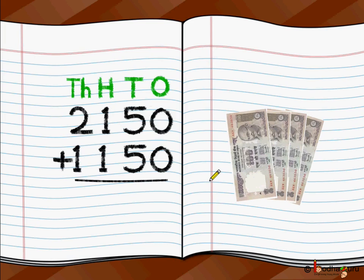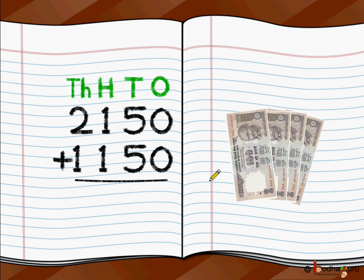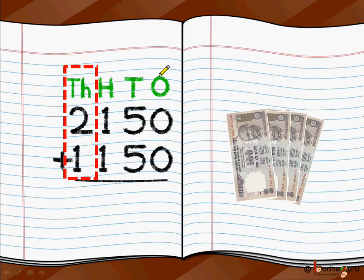Then at the 100's place, then at the 1000's place. That is, we start from the 1's place and go towards the 1000's place — we are going from right to left.